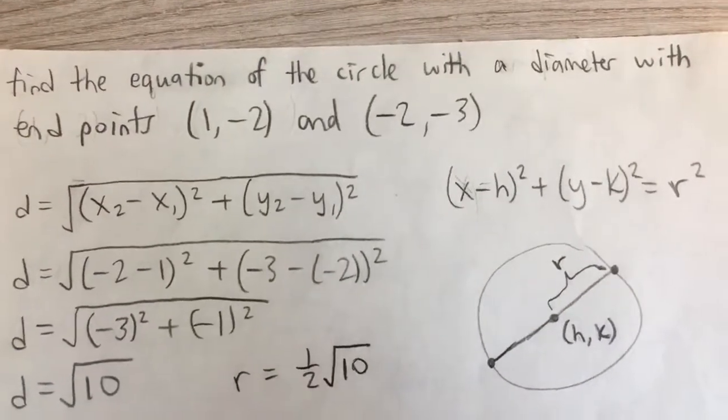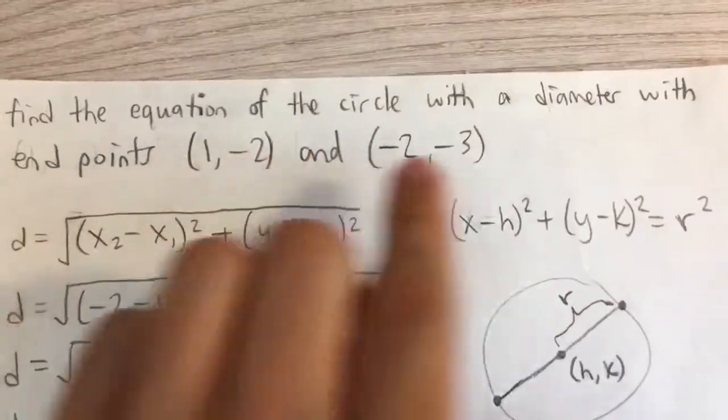Find the equation of the circle with a diameter with endpoints (1, -2) and (-2, -3).